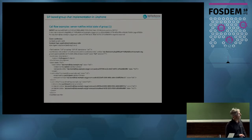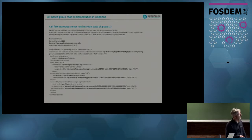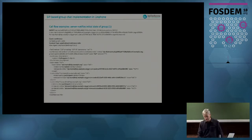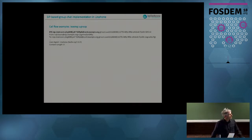The conference server sends a NOTIFY message with a description of the conference. This is a full description initially, but later — for a participant being added or removed — there will be partial notifications. This XML dialect gives the subject and the list of participants: Mary, Lore, and Pauline. We can see that user Pauline has two devices with different IDs, so every client has full visibility of which other participants and devices are part of the conference. To leave a conference, you say BYE, like in any SIP session.